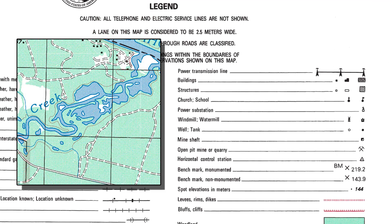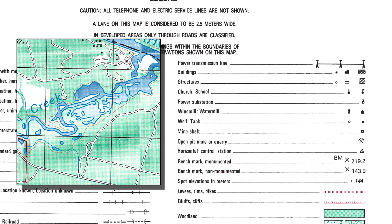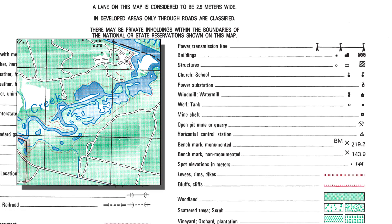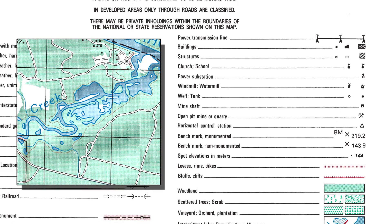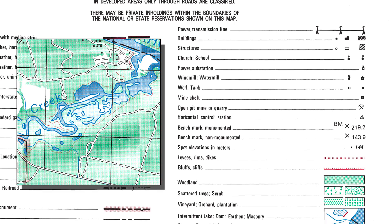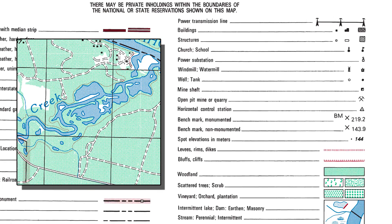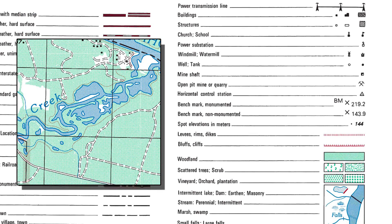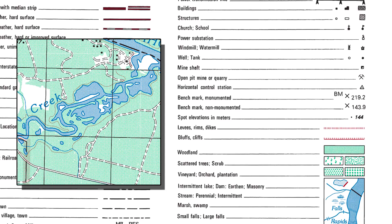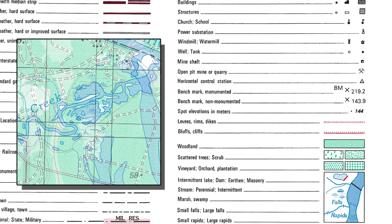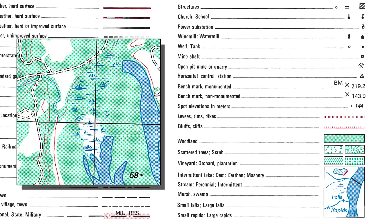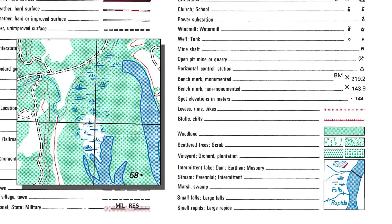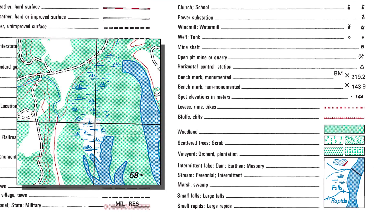A round or irregular blue item is a lake or pond. Learn to use logic and color to identify each map feature. For example, blue represents water — if you see a symbol that is blue and has clumps of grass, this would be a swamp.